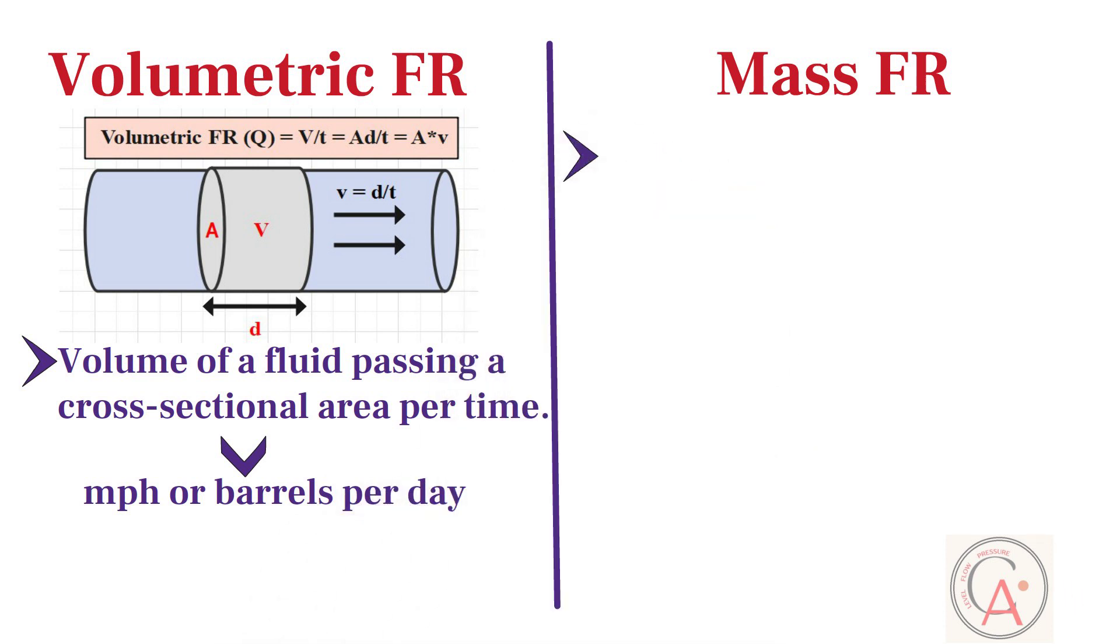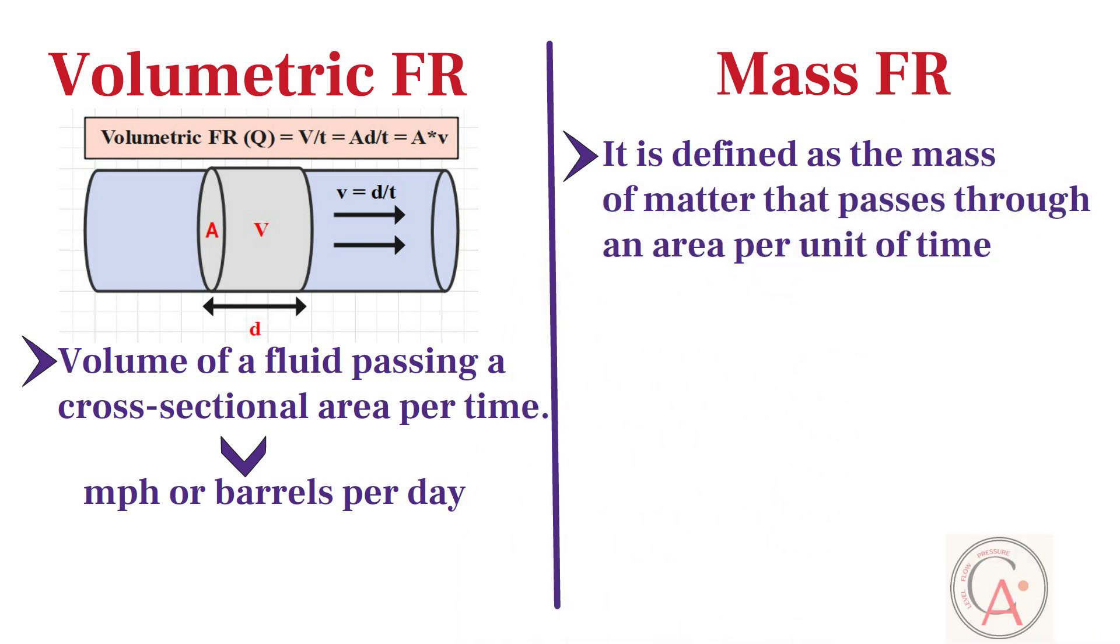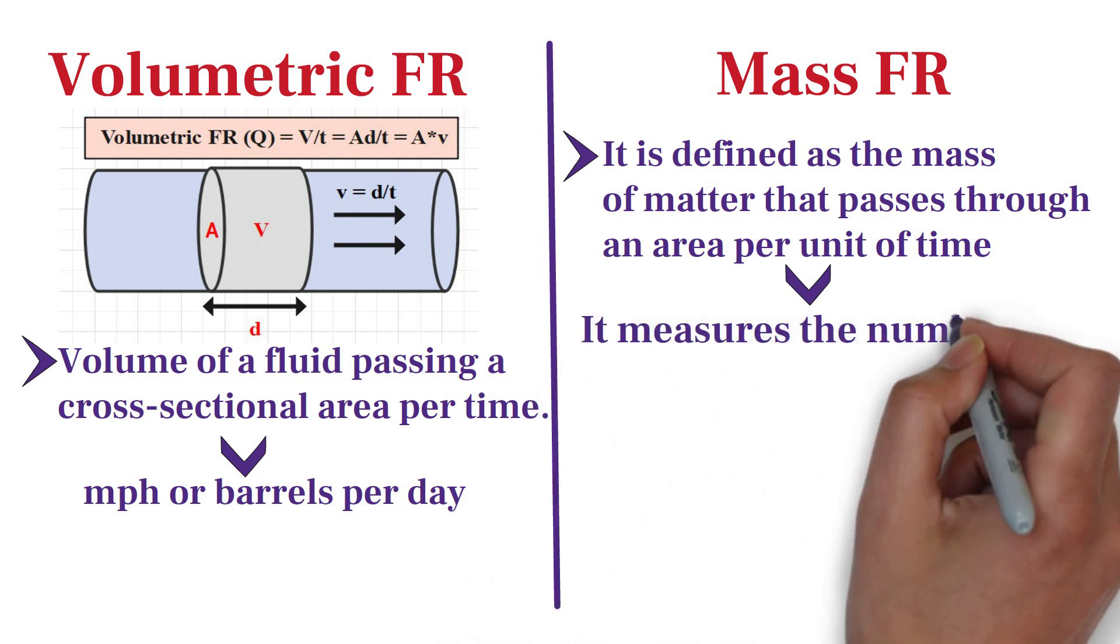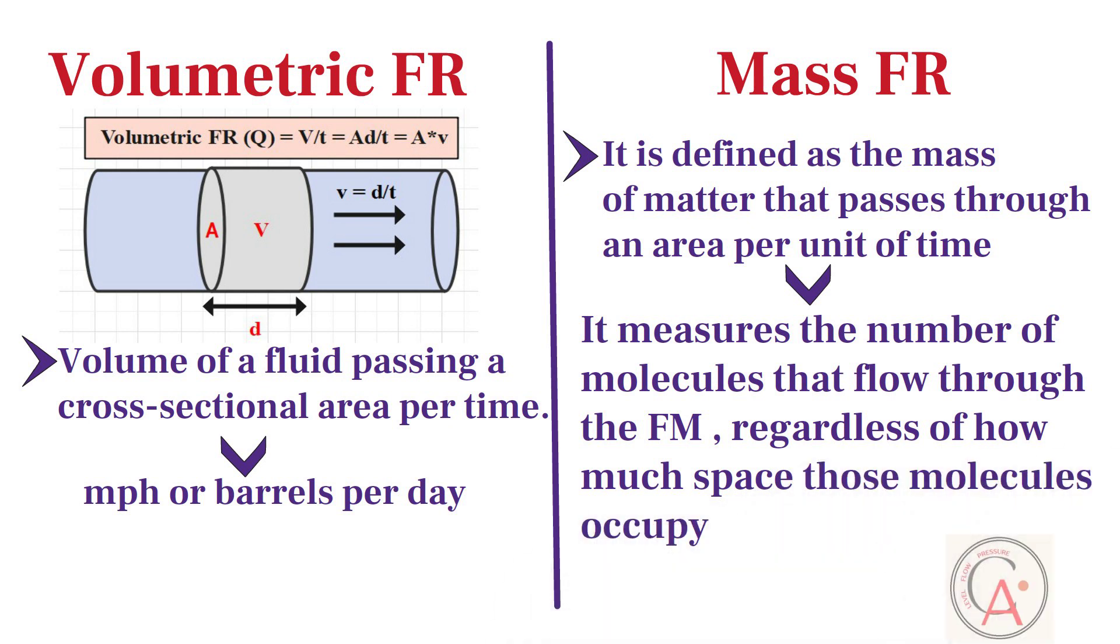On the flip side, mass flow rate is defined as the mass of matter that passes through an area per unit of time. In other words, mass flow rate measures the number of molecules that flow through the flowmeter, regardless of how much space those molecules occupy.